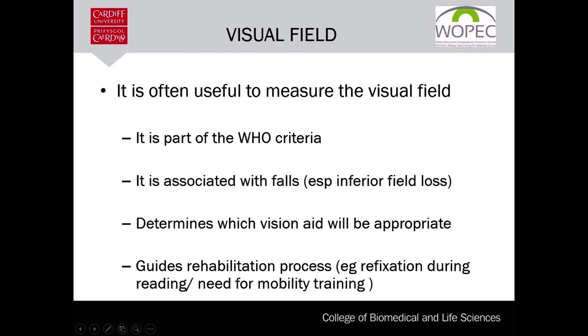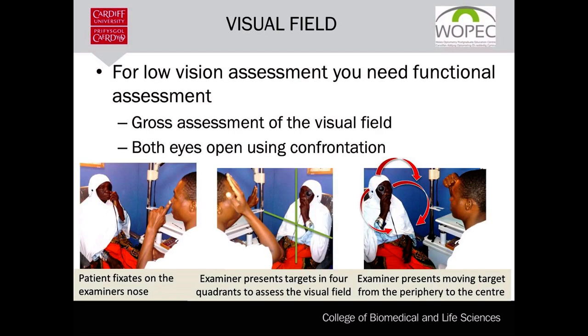Visual field is part of the World Health Organization criteria for categorizing someone as having low vision. It is often associated with falls, especially when the field loss is inferior. Knowing the client's visual field helps the practitioner decide which low vision aid will be beneficial. A gross assessment of the visual field is sufficient for low vision assessment. The easiest method is the confrontational visual field test, which compares the client's visual field with the practitioner's. The client fixates on a target — in this case the examiner's nose — while the examiner focuses on the patient's nose to anchor their own visual field. The examiner then presents fingers in the four quadrants to check for any significant defects.